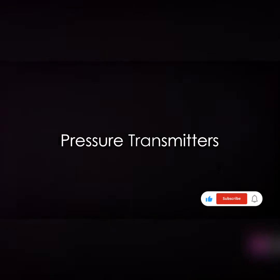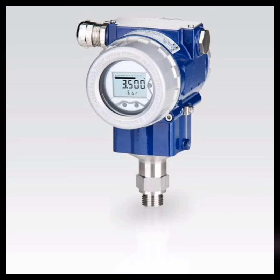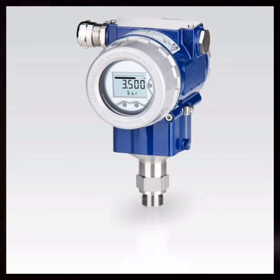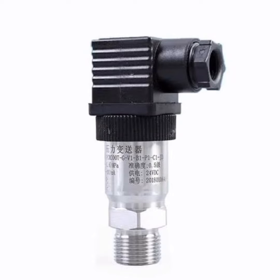Pressure transmitters are similar to pressure transducers. They convert pressure into an electrical signal for measurement and control purposes. They are popular in industrial applications that require continuous monitoring and precise control of pressure.